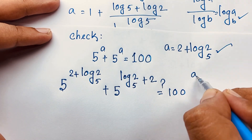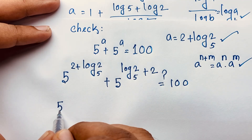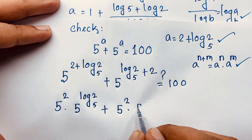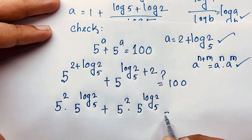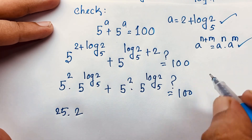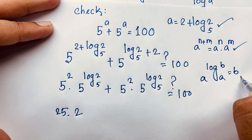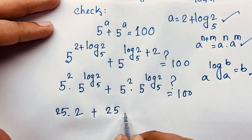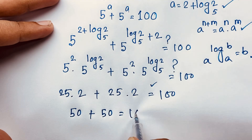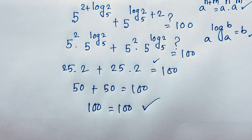Now, using the exponential formula a to the power n plus m equals a to the power n times a to the power m, it will be 5 to the power 2 times 5 to the power log 2 base 5, plus 5 to the power 2 times 5 to the power log 2 base 5, equals 100. Now 5 to the power 2 is 25. And using the formula a to the power log base a of b equals b, 5 to the power log 2 base 5 equals 2. So it will be 25 times 2 plus 25 times 2 equals 100, which is 50 plus 50 equals 100. Left hand side and right hand side are both equal in this exponential math problem.